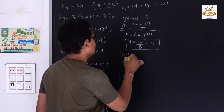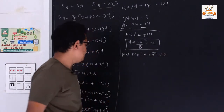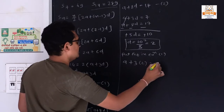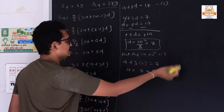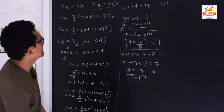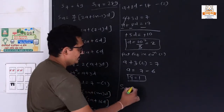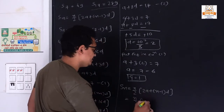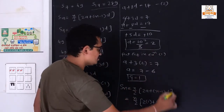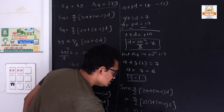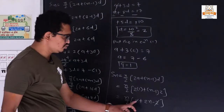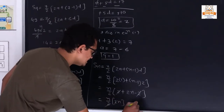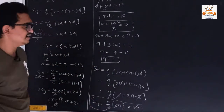Substituting d = 2 into equation 1: a + 3×2 = 7, so a + 6 = 7, giving a = 1. Now Sn = n/2 × (2×1 + (n−1)×2) = n/2 × (2 + 2n − 2) = n/2 × 2n = n². We can verify: 7² = 49 and 17² = 289. So Sn = n².